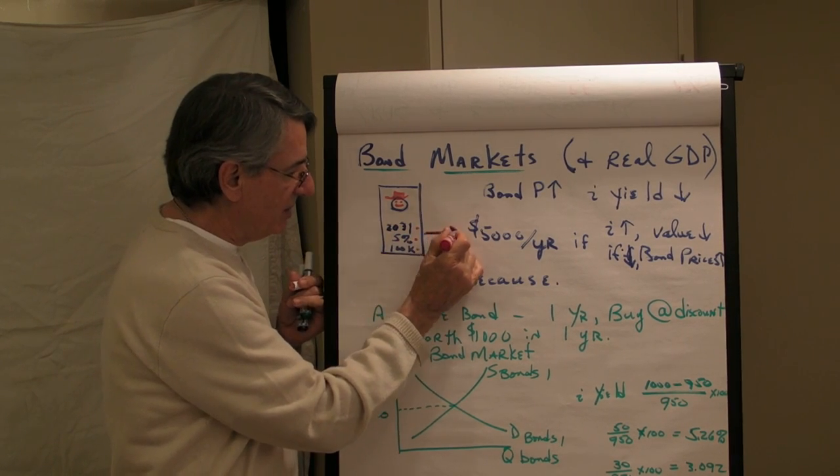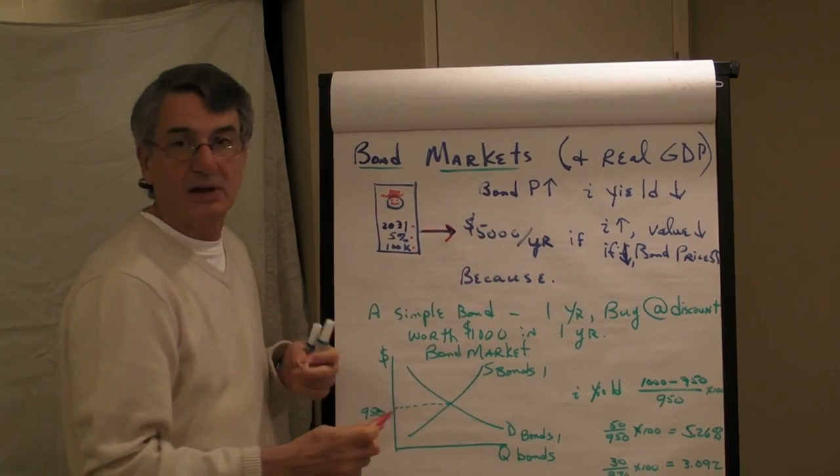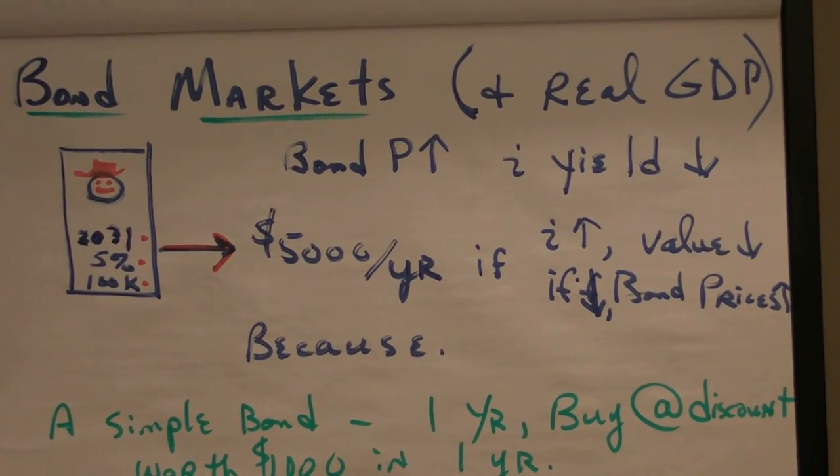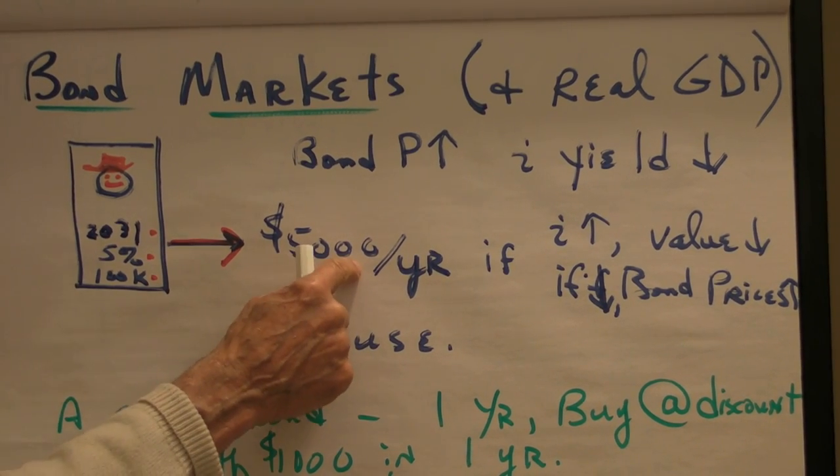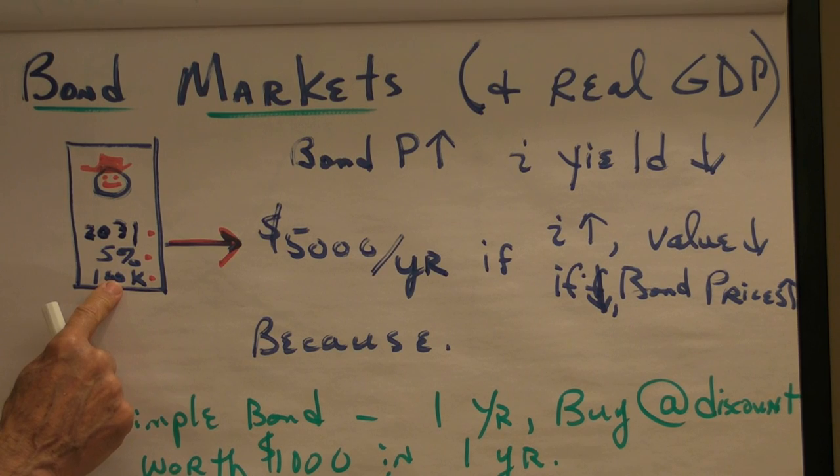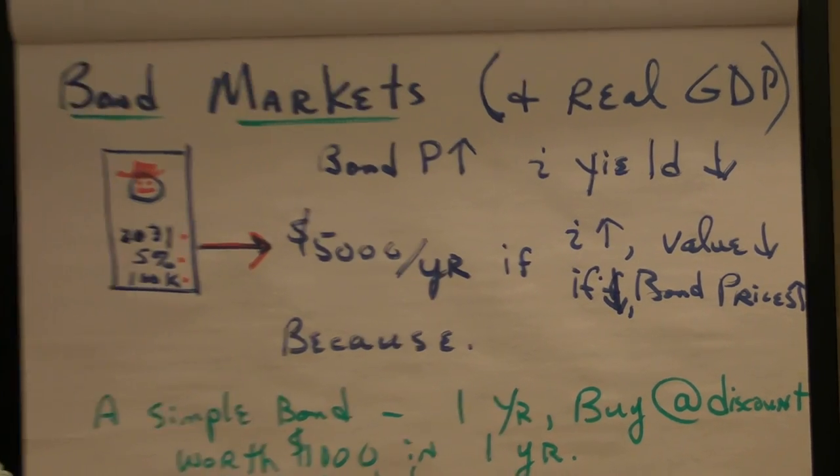This is a little machine that spits out $5,000 a year. That's what it does. And at the end of the period, in the year 2031, it will spit out its $5,000 and give you the $100,000 back and then it falls over dead. It's done.